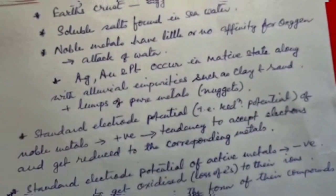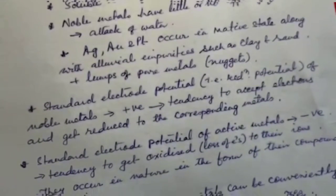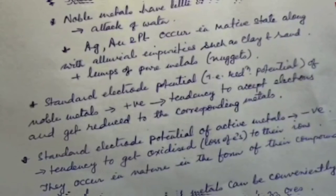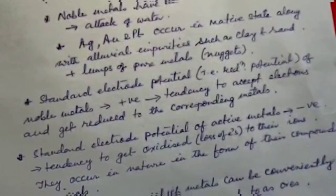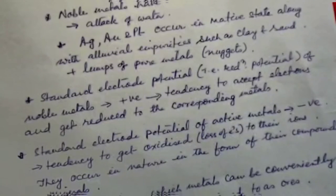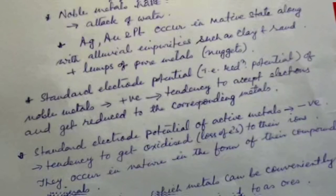The standard electrode potential (reduction potential) of noble metals is always positive, which means that the ions of such metals have a tendency to accept electrons and get reduced to the corresponding metals. Noble metals are those metals of Group VIB, VIIB, and Group IB of the second and third transition series of the periodic table. That is why these metals occur in the metallic — that is, native — state.